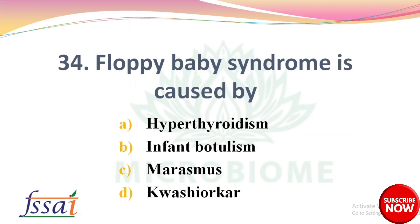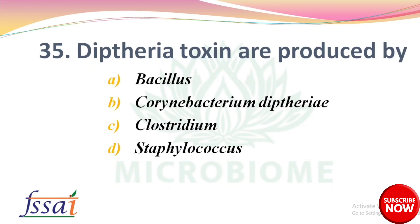Next: Floppy baby syndrome is caused by — options: hyperthyroidism, infant botulism, marasmus, cercaria. The right answer is option B, infant botulism. Next: Diphtheria toxin is produced by — options: Bacillus, Corynebacterium diphtheriae, Clostridium, Staphylococcus. The right answer is option B, Corynebacterium diphtheriae.